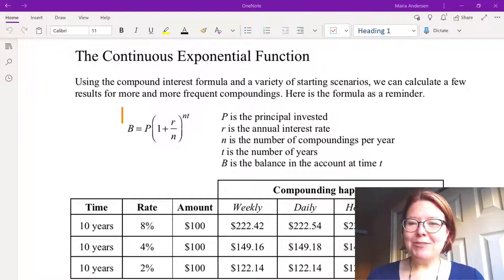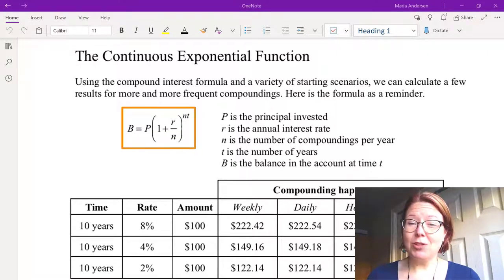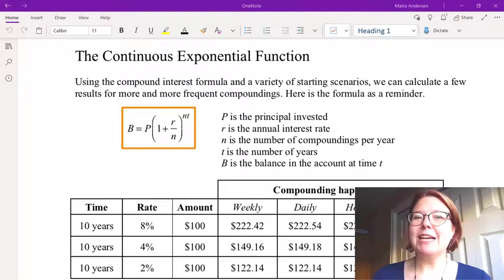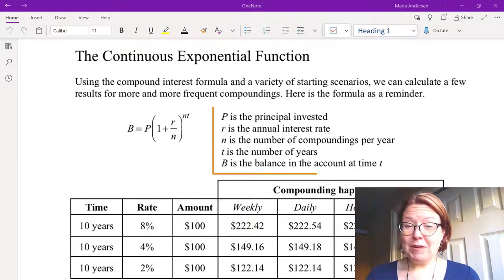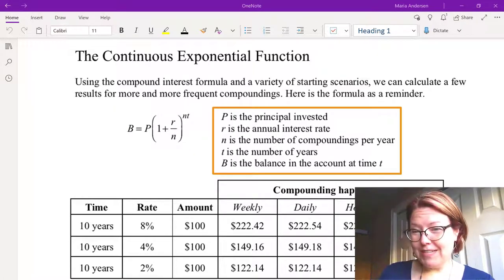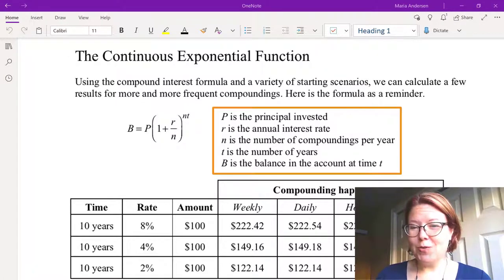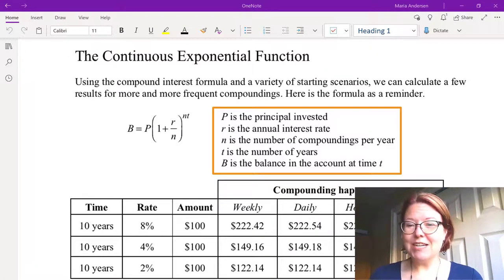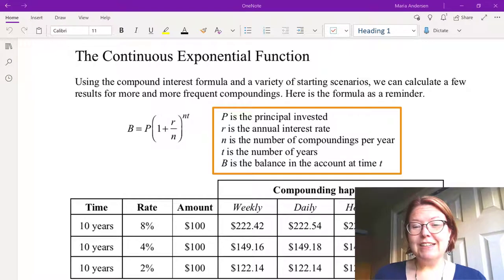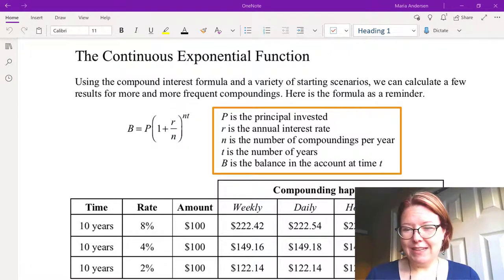Just as a reminder, the formula for compound interest is B = P(1 + r/n)^(nt). When we go through this formula, P is the principal invested, r is the annual interest rate, n is the number of compoundings per year, t is the number of years, and B is the balance in the account at time t.